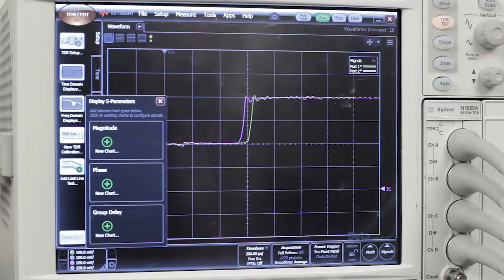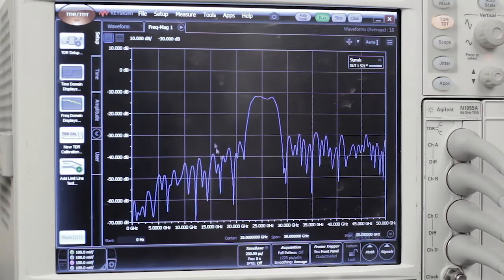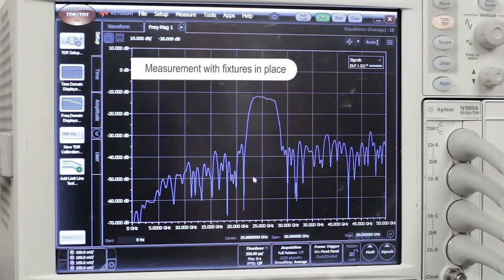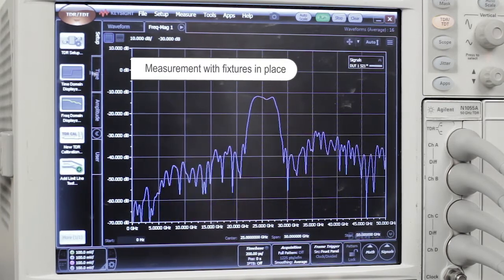For those of you who have seen the DUT and may have already figured out that it's actually a band pass filter. So we just want to take a look at the insertion loss S21. And there it is. You can see the pass band at about 25 GHz. And this is the insertion loss of our DUT with the fixtures in place. So now let's de-embed those fixtures.